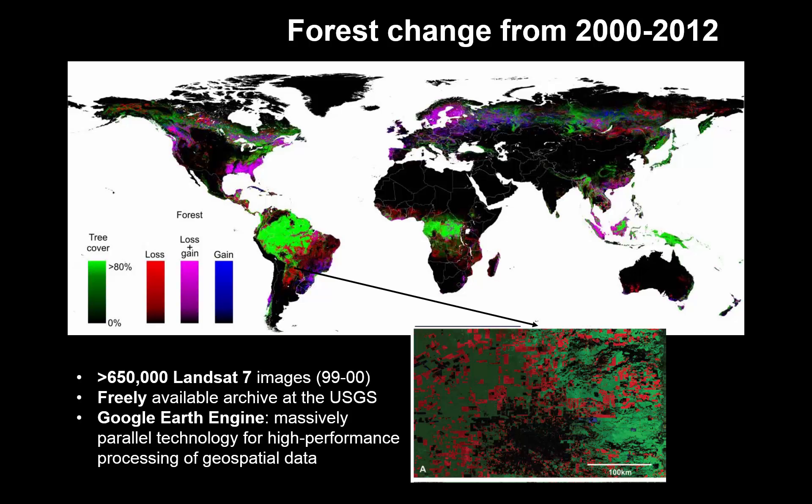Also using Landsat data, the University of Maryland has built global maps that show changes in forests and other types of land cover. You can, for example, see the higher rate of loss due to deforestation dynamics in the Chaco woodlands of Argentina. Just to give you an idea of the size of the analysis they did, they processed more than 650,000 Landsat 7 images in collaboration with the Google Earth Engine, who implemented the models developed at the University.